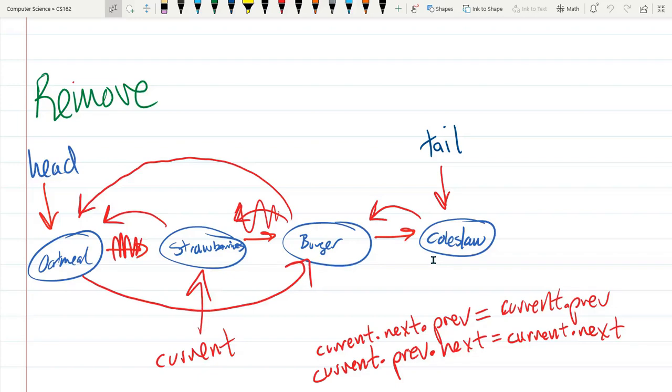If I'm going to do anything with an index, an add, remove, get, set, anything with an index, you want to think about splitting this in half.